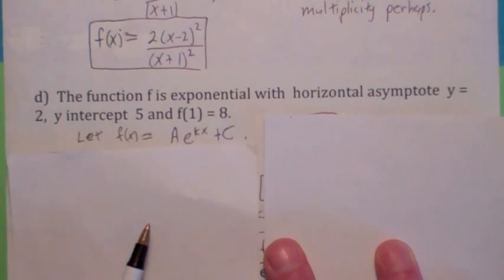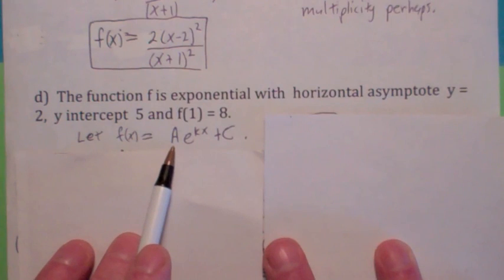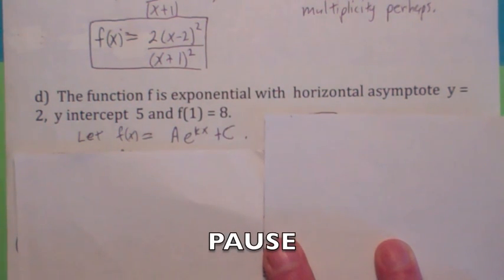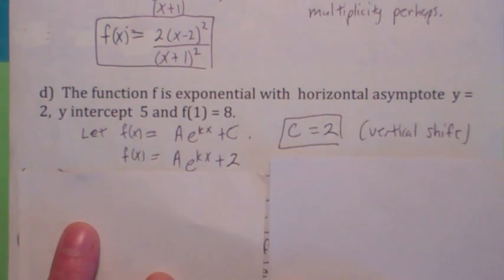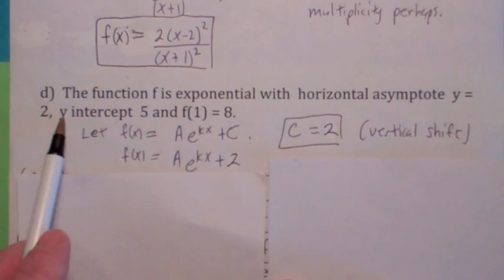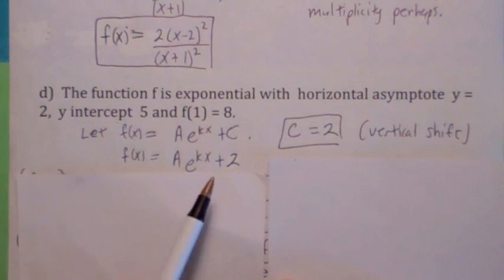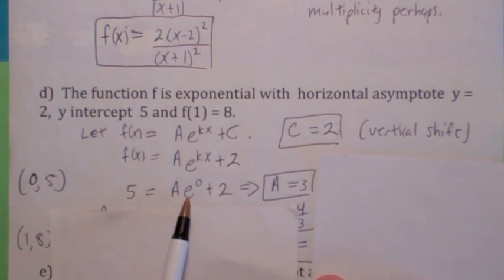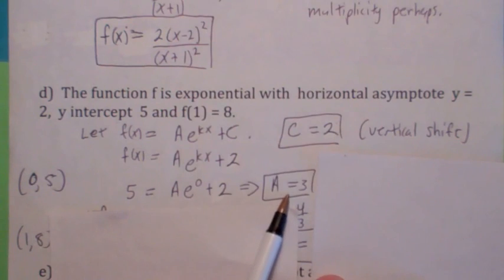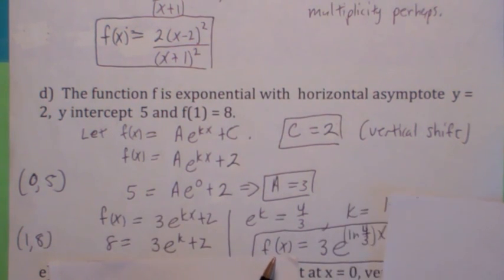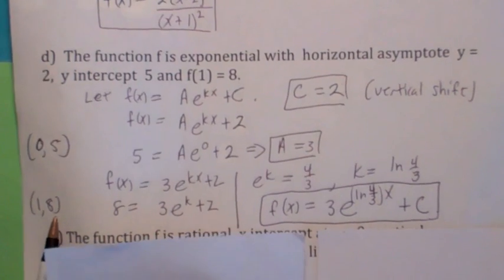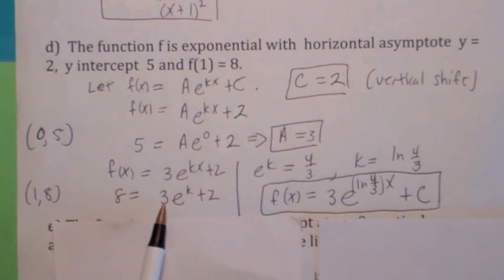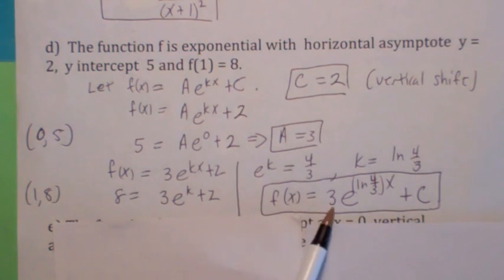This one's exponential. Let's assume it has the form f of x equals a times e to the kx plus c. First, c equals 2 because that's your vertical shift — your vertical shift is your horizontal asymptote. Then find a using the y-intercept at 0, 5: when you plug in 0 for x, the exponential term becomes 1, so a equals 3. Then find k by plugging in the point 1, 8 — plug in 8 for y and 1 for x, use natural logs, and solve for k as ln of 4 thirds. Put it all together and there's your function.